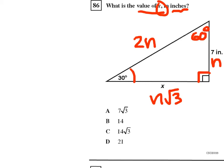So we have 2n, n root 3, and n. So we know that n is equal to 7, and we need to find what x is.